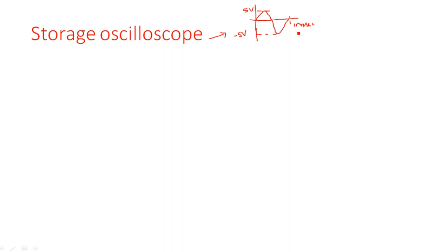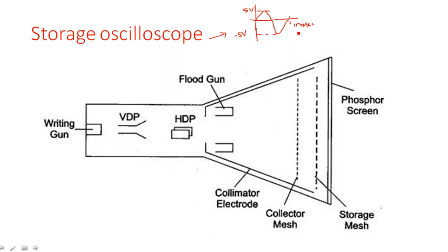So the storage oscilloscope is used to store the signal that has been displayed previously. It is an analog storage oscilloscope — we also have digital storage oscilloscopes available — and whatever data we are displaying is stored. Now let us see the block diagram of this storage oscilloscope. We can see the writing gun, and normally the CRT screen components such as horizontal deflection system and vertical deflection system are all common here, except some additional features.